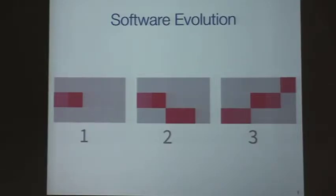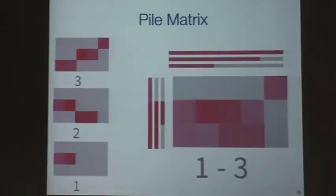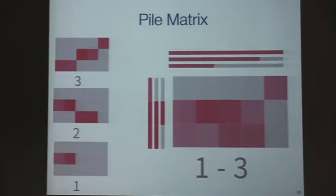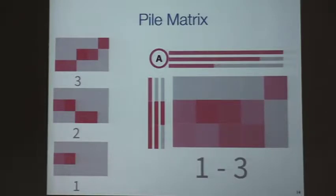Another way to see this is stacking matrices. This idea was presented by Batch in his paper on small multiples at Computer Graphics in 2015. I will explain the parts of the pile matrix. The first part are the horizontal bars.